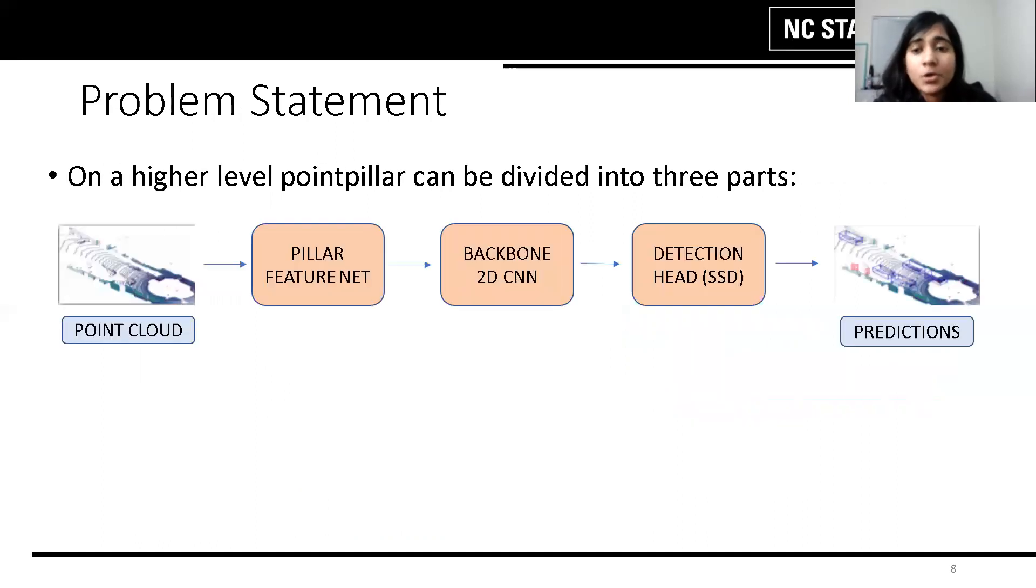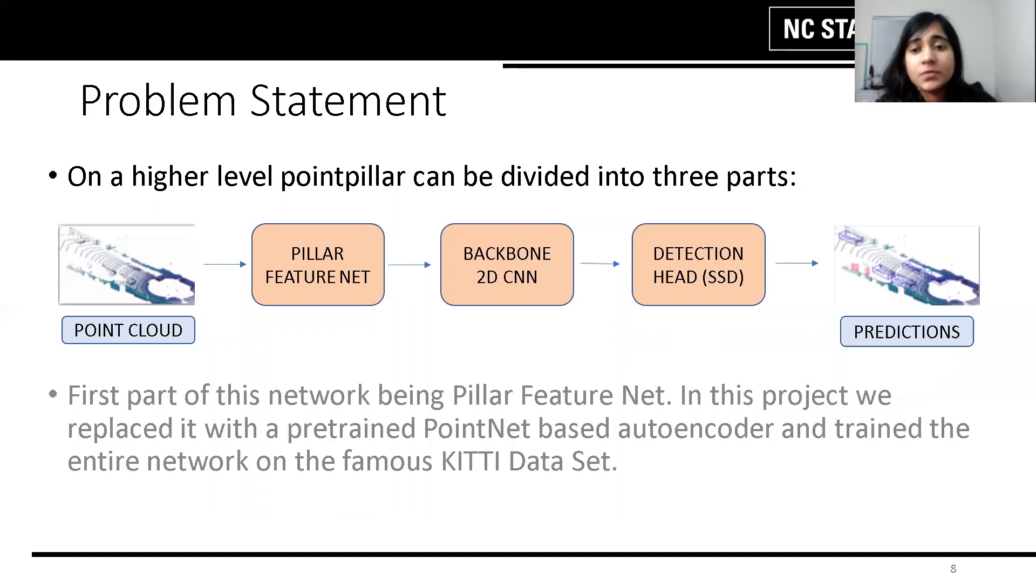In our project, the point pillar architecture has three stages: the feature net, the 2D CNN and the detection head. For the pillar feature net, we have used a pre-trained PointNet-based encoder and have used the KITI dataset to train our network.